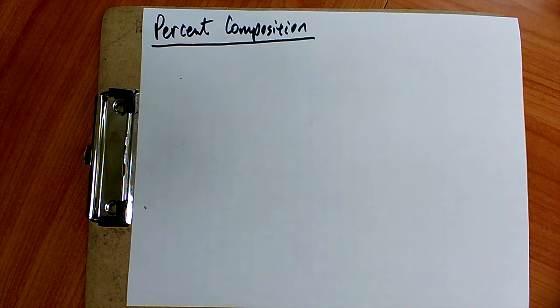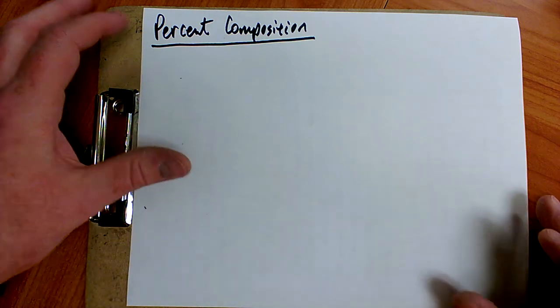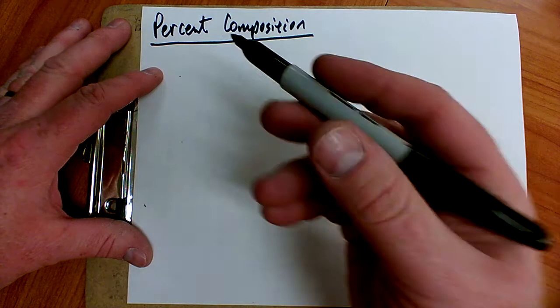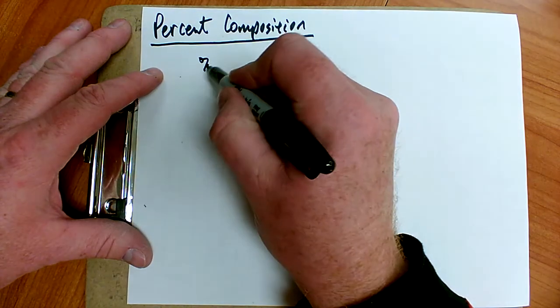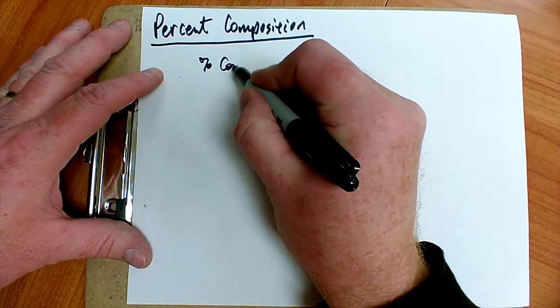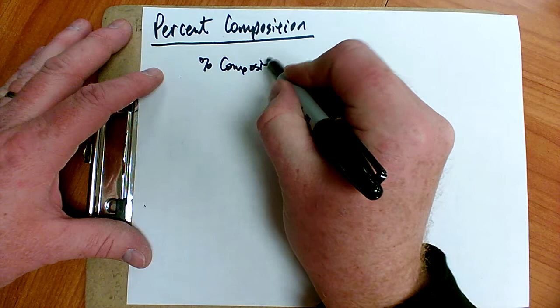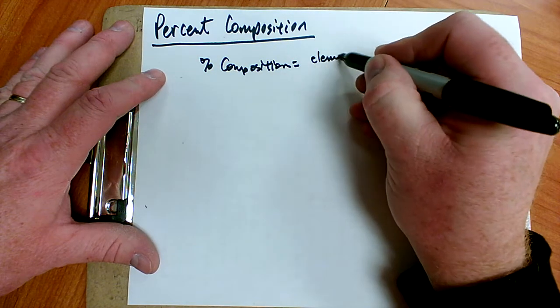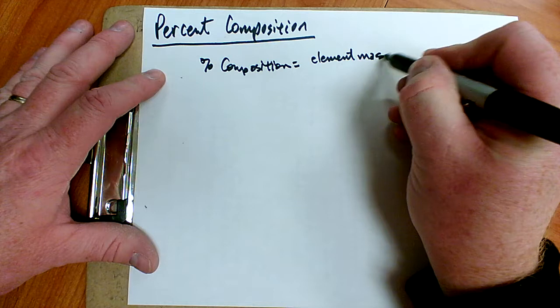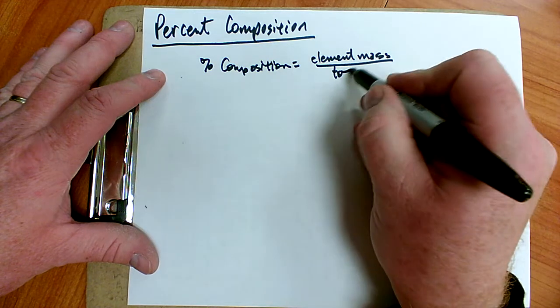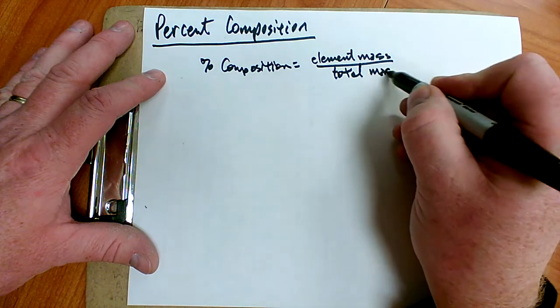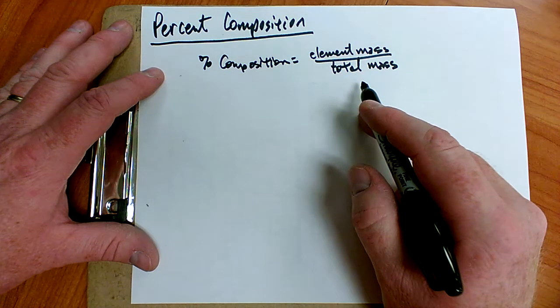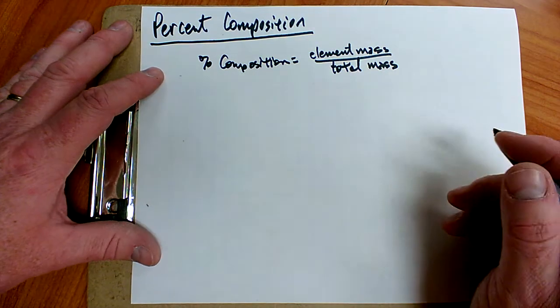Percent Composition is a way of expressing the ratio of elements to a compound by mass. The formula for finding percent composition is fairly straightforward. Percent Composition is simply equal to the element mass within a compound divided by the total mass of the compound. That will give you a fraction. You will then convert that to a percentage by multiplying it by 100.